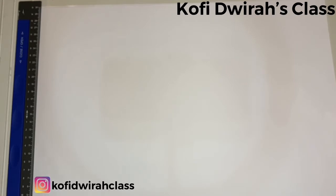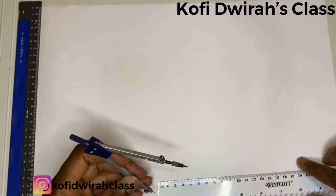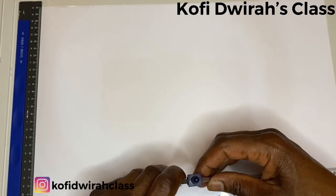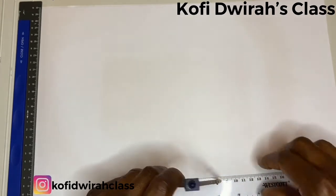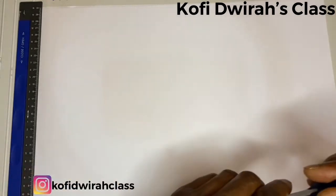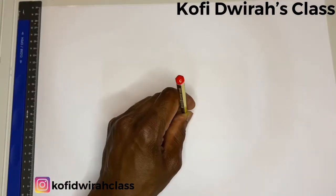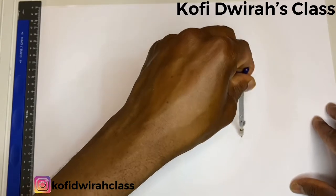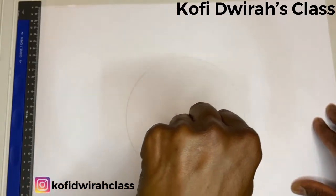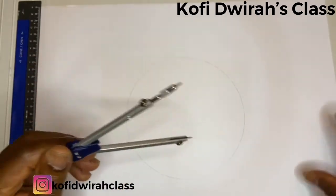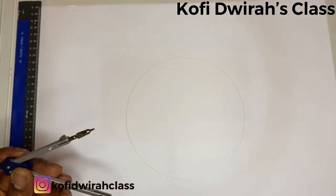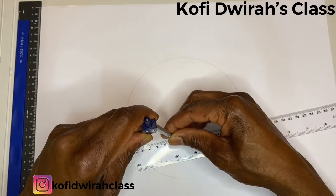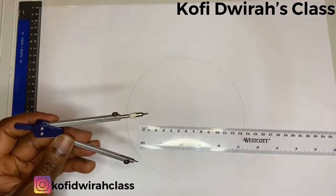First, we draw our circles. We choose the radius to be eight centimeters — eight centimeters will be the radius, with one point as the center. Then the smaller circle will be six centimeters.